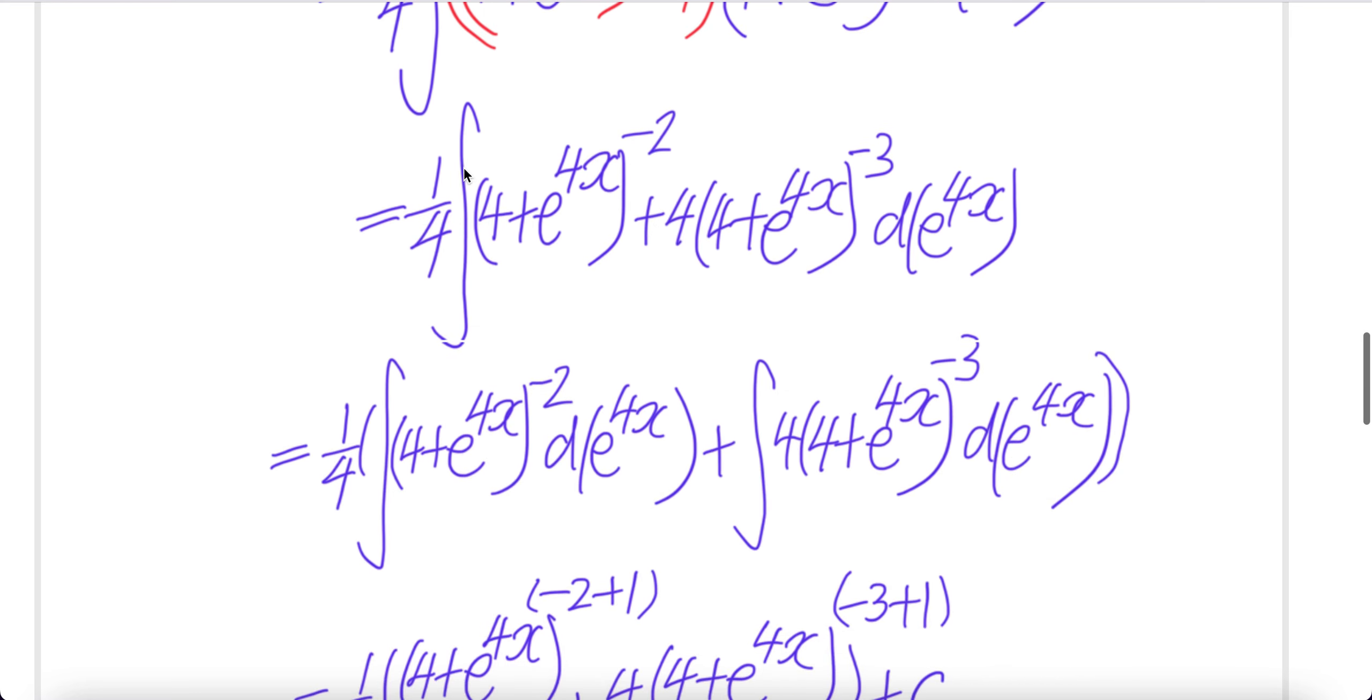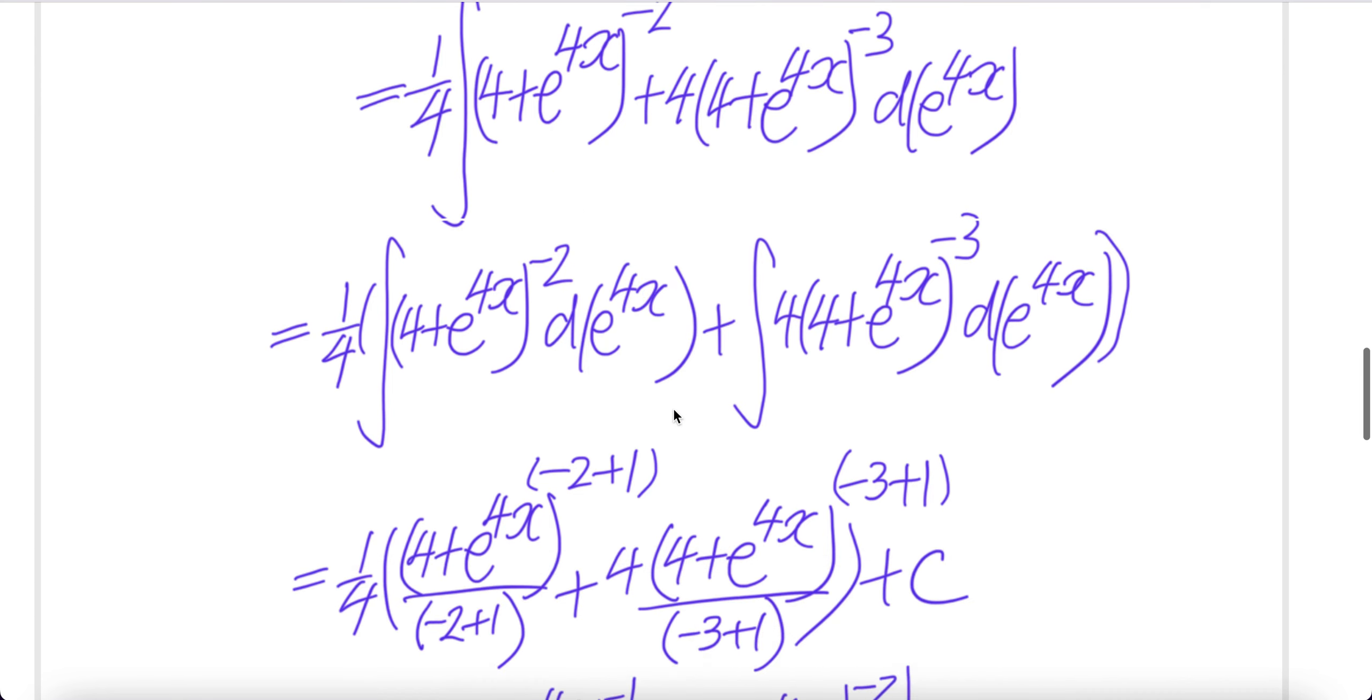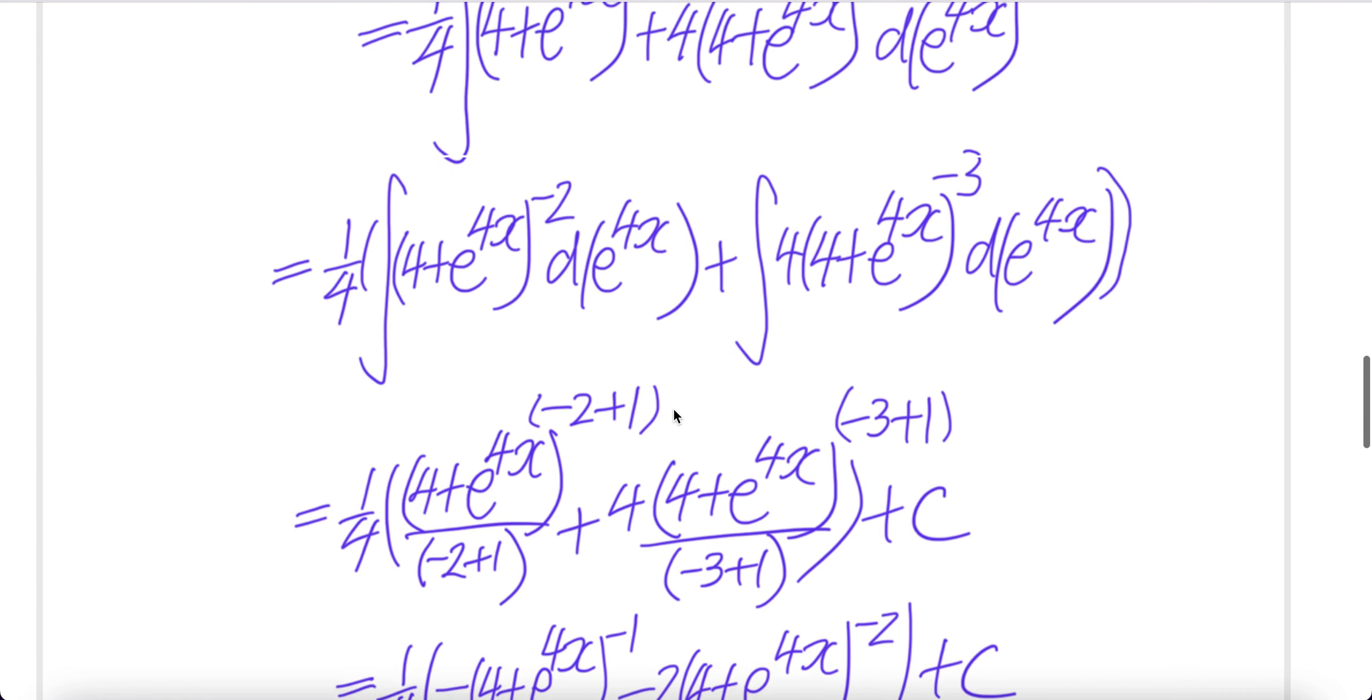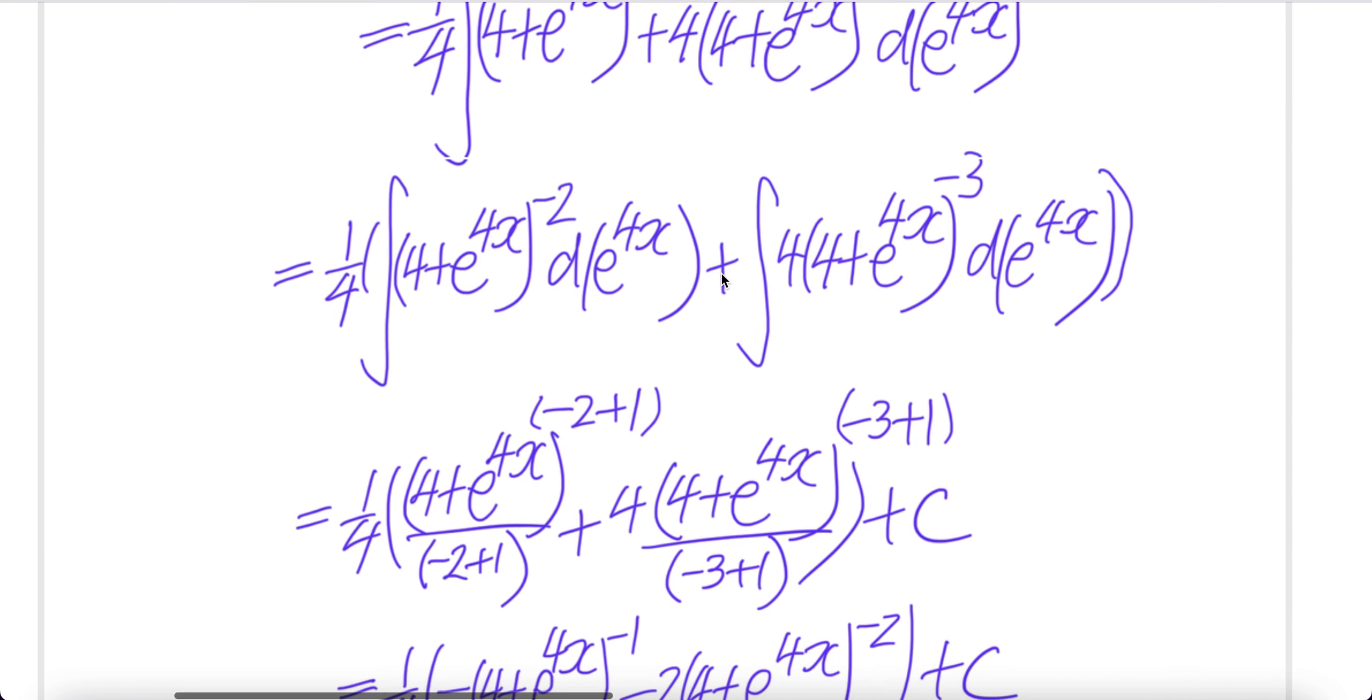Now there are two integrals. This one gets its own integral. This one gets its own integral. Remember, take with respect to e to the power of 4x, not x. Remember this is negative.